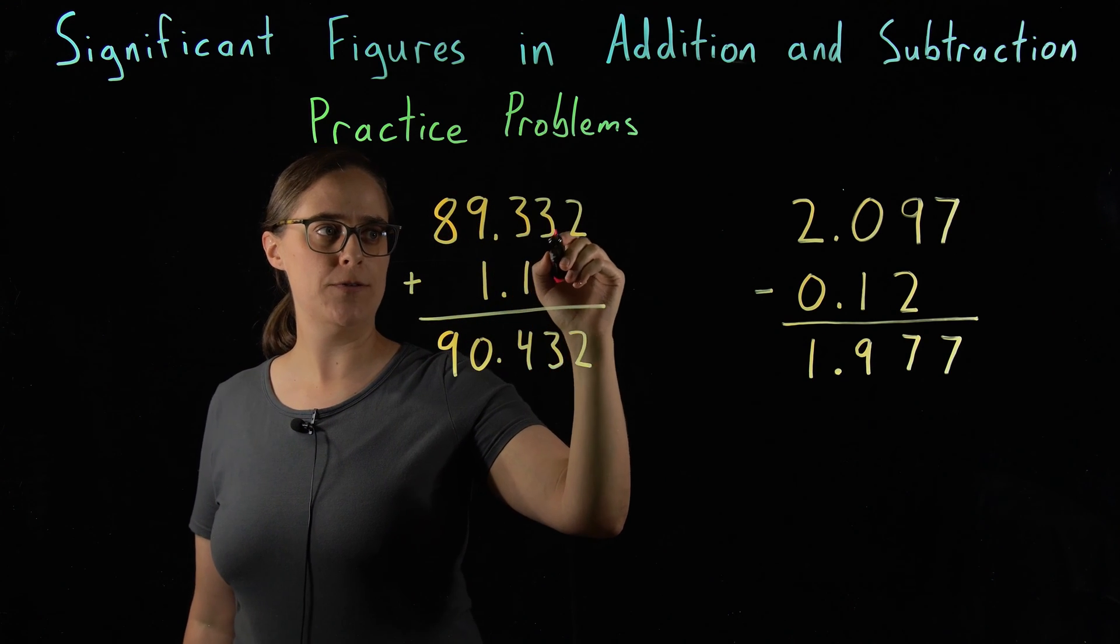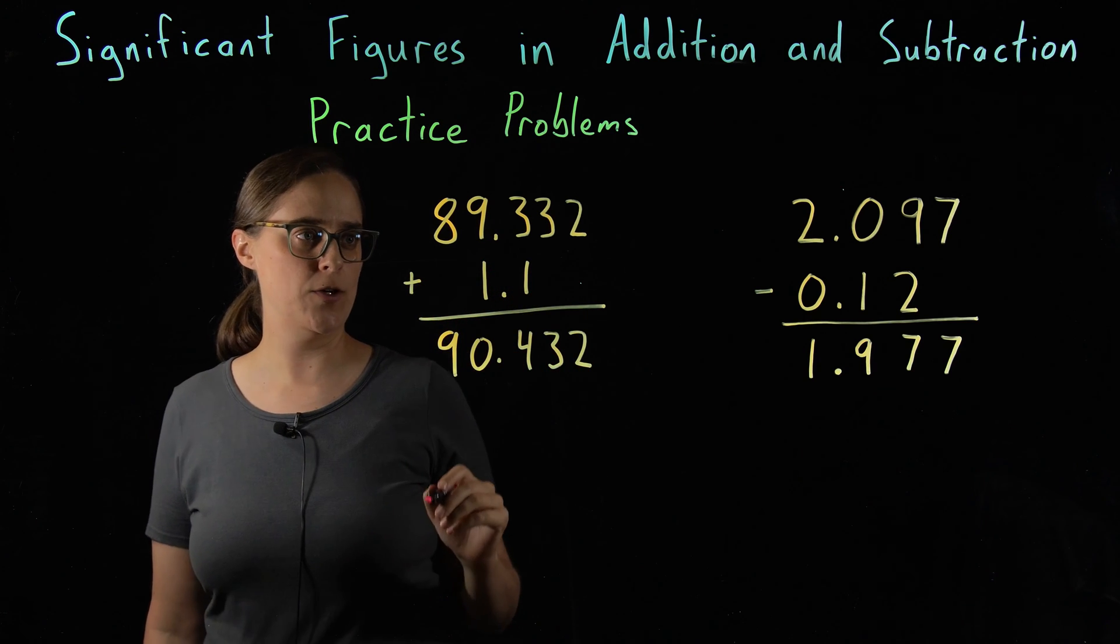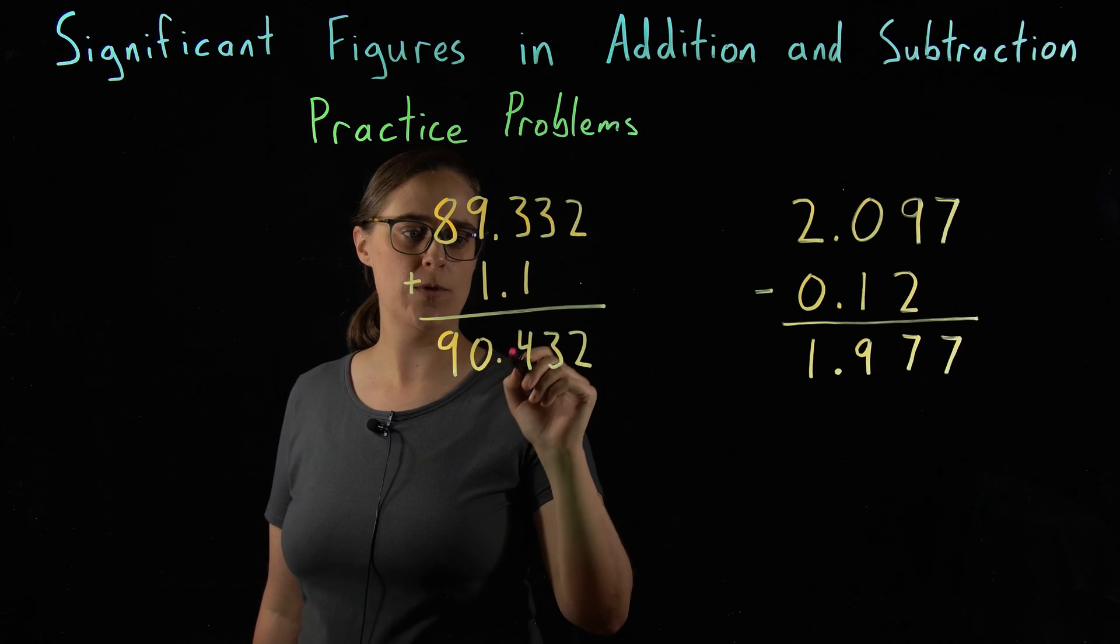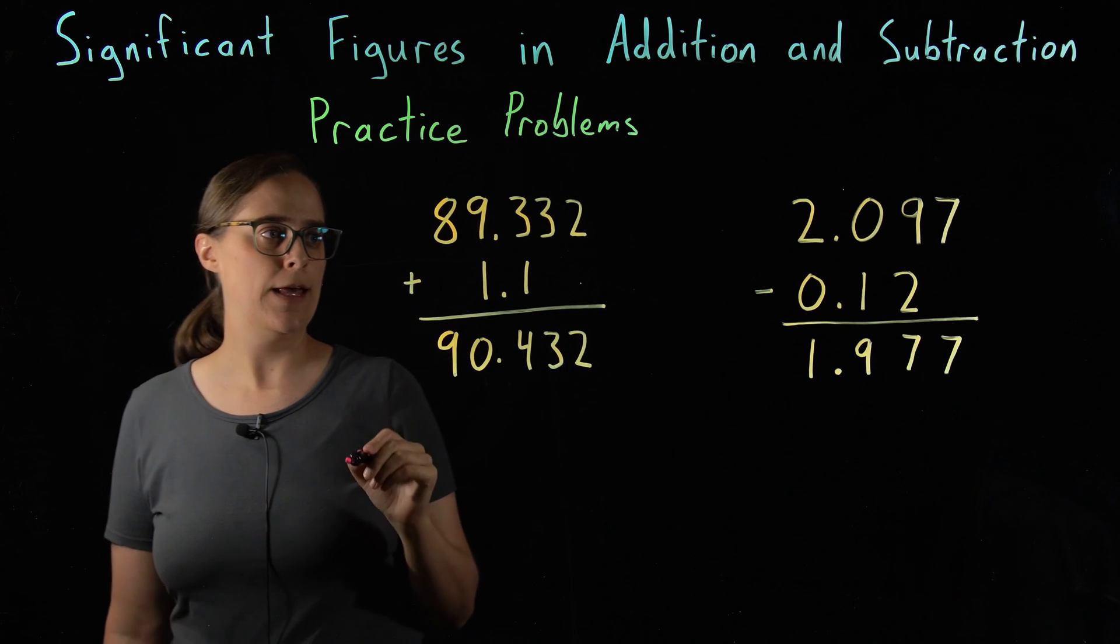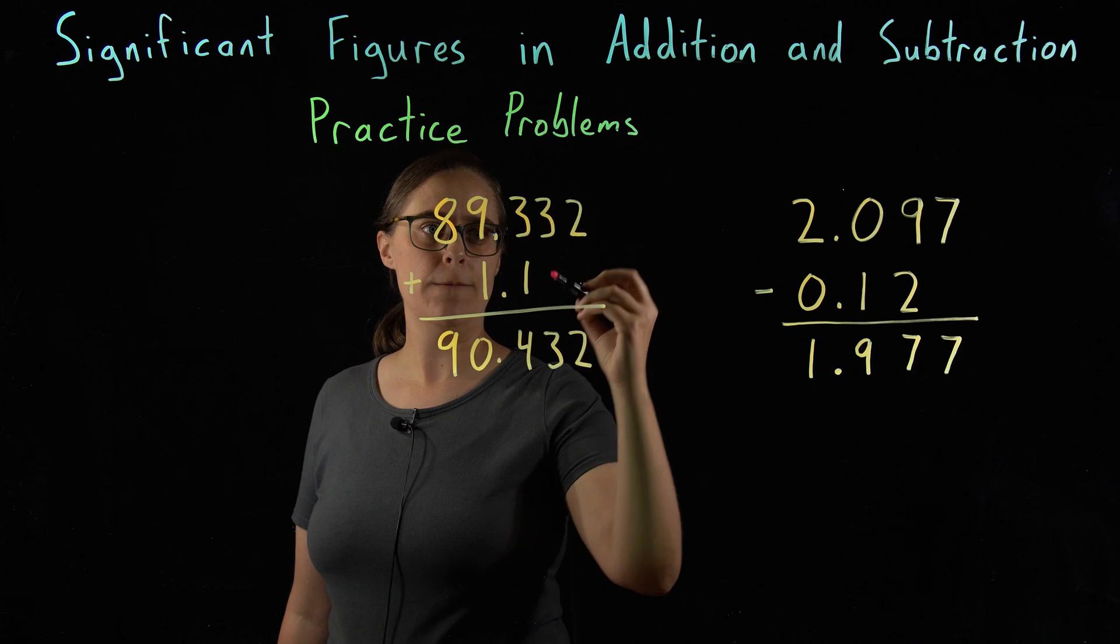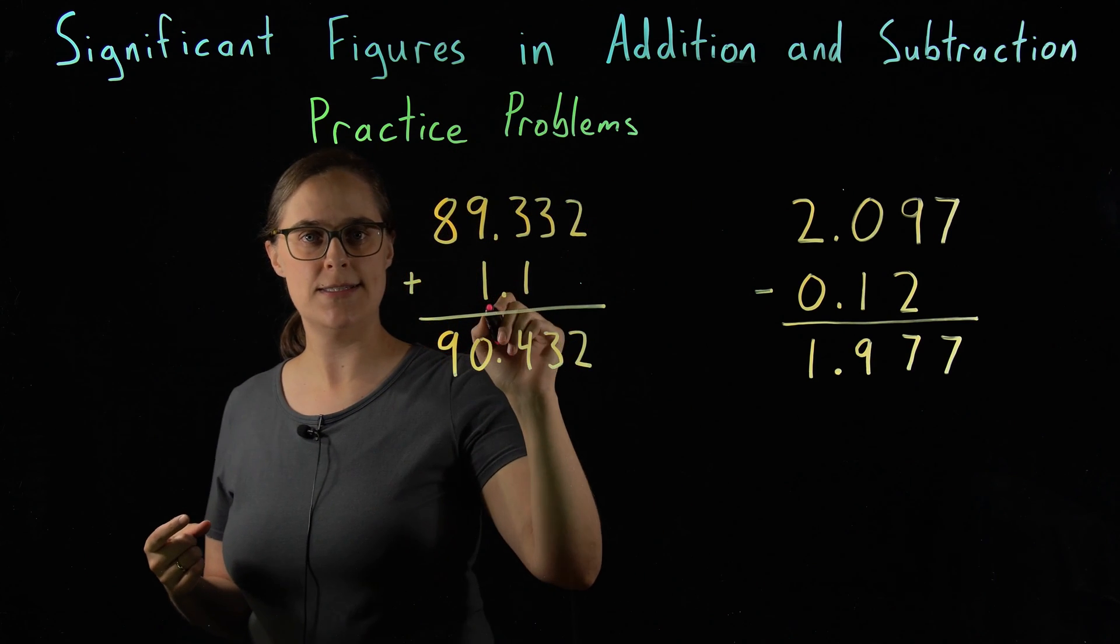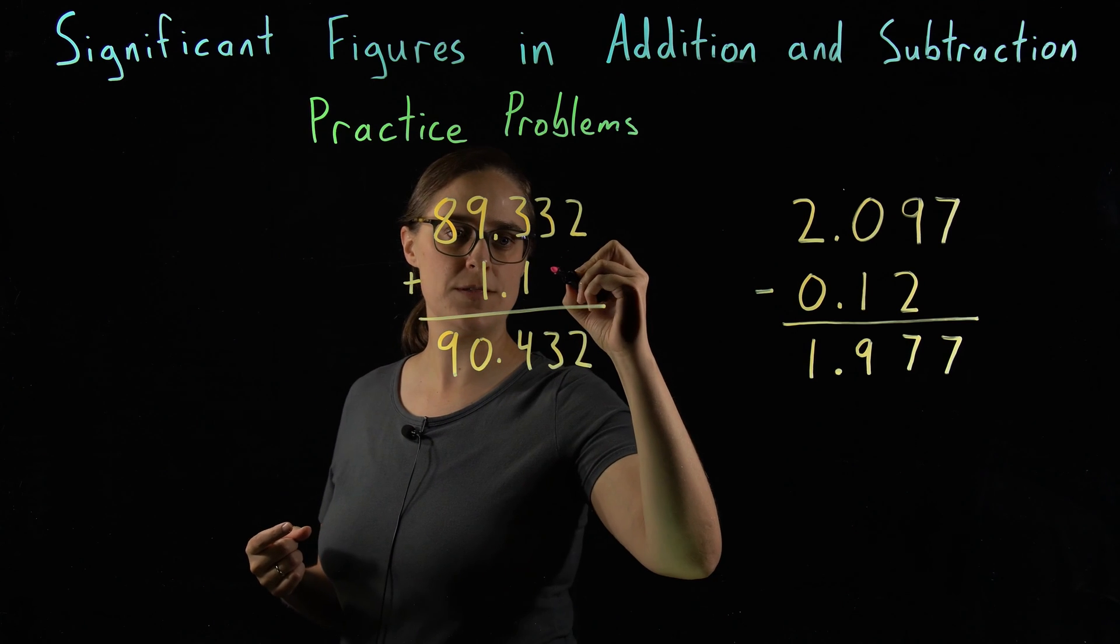What we need to do is to figure out how to properly round these answers. So our first problem, 89.332 plus 1.1. A calculator would give you 90.432. However, we are limited by this 1.1. Our first number, we have three digits after the decimal place. The second number, we only have one digit after a decimal place.